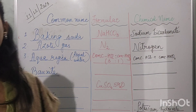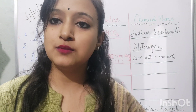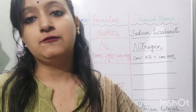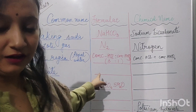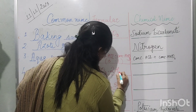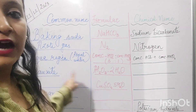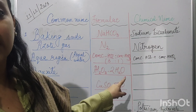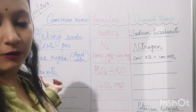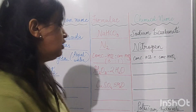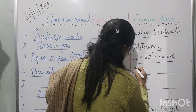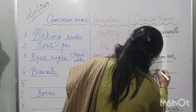The next compound is bauxite. You must have studied in social science that bauxite is the ore from which aluminium metal is extracted. Bauxite is the common name for the chemical compound aluminium oxide dihydrate — the ore from which aluminium is extracted. Now comes the question: why is aluminium oxide dihydrate named bauxite?